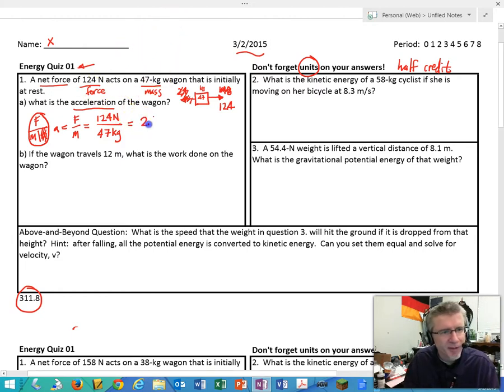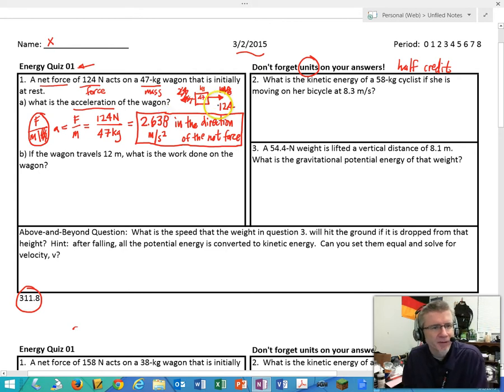And I really like people who said in the direction of the net force. So meters per second squared is the units for acceleration, in the direction of the net force. Remembering that acceleration is a vector, force is a vector, you're always going to move in the direction that the most newtons are pulling you. Okay, next. If the wagon travels 12 meters, what is the work done on the wagon? So we've got a distance here.